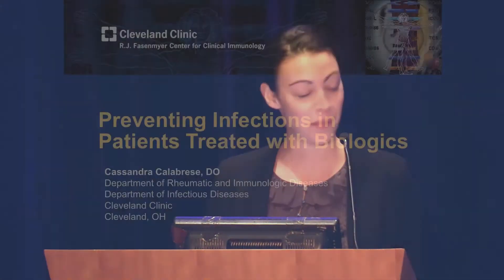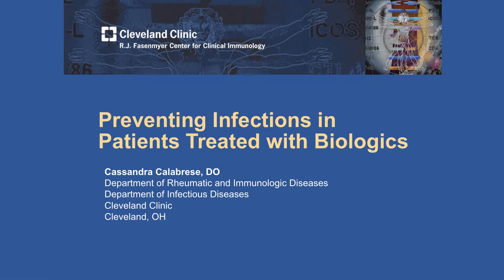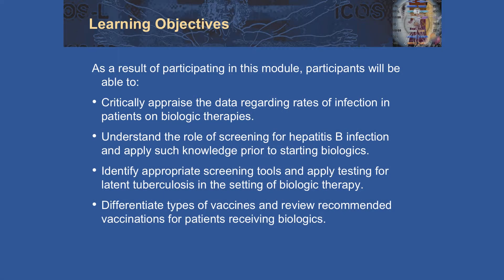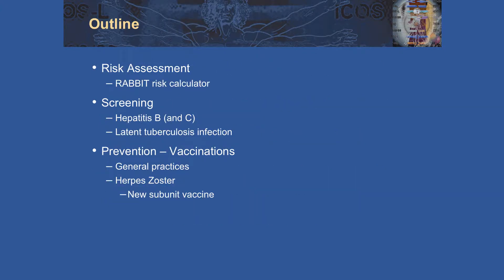Thank you for having me. I'm very happy to be here. I'm going to talk about preventing infections in patients treated with biologics. I hope for my talk to complement Dr. Looney's talk earlier this morning. This is a big topic, and I hope to hit the highlights. I'm going to introduce the RABIT risk calculator, talk about some nuances of hepatitis B screening and screening for latent TB, and then wrap up with vaccines and spend a few minutes on the new herpes zoster vaccine.